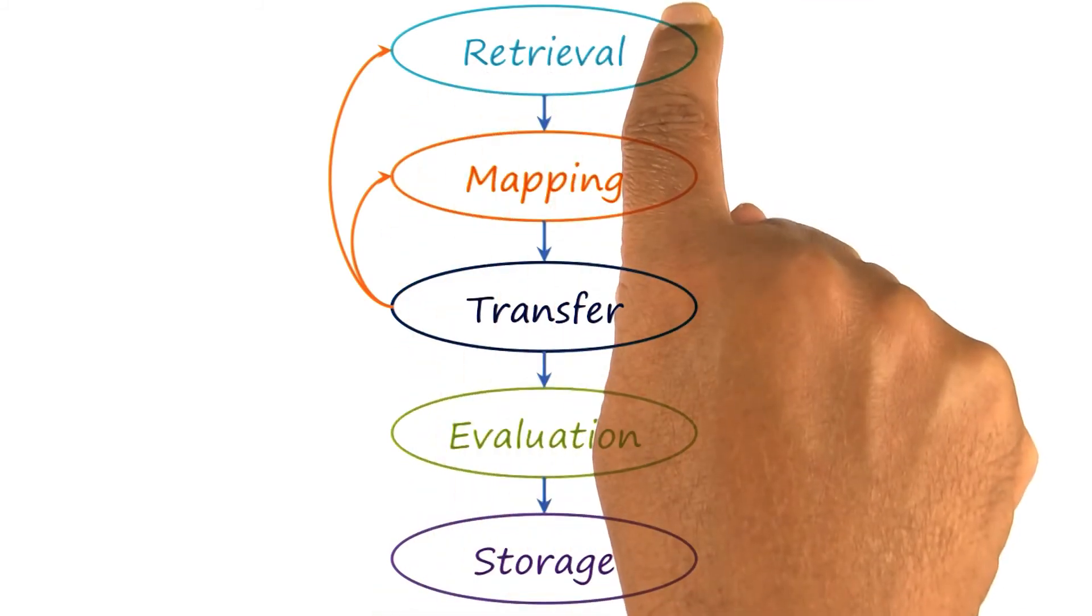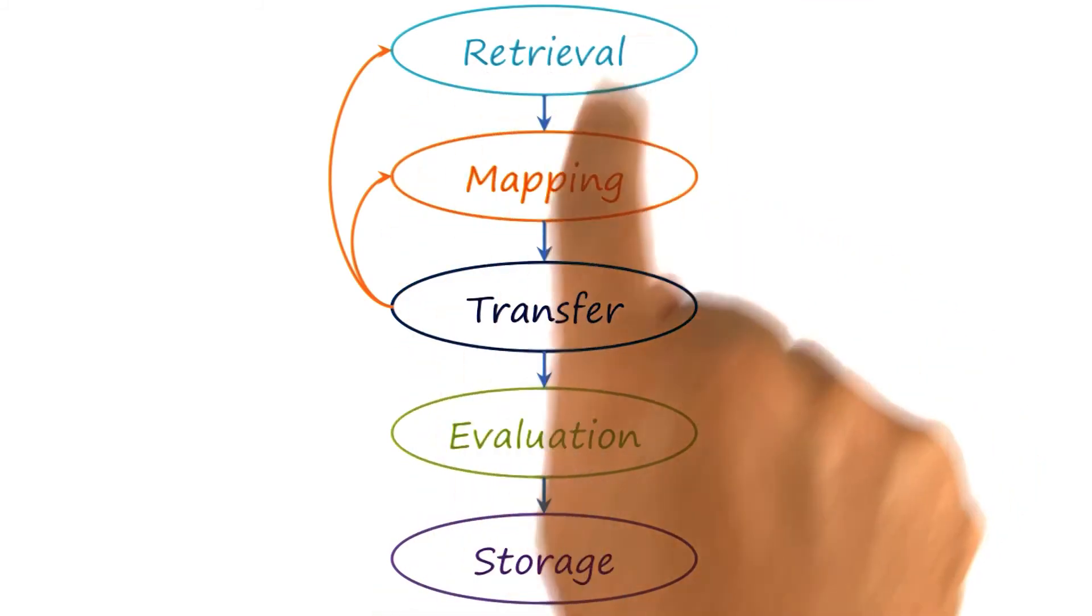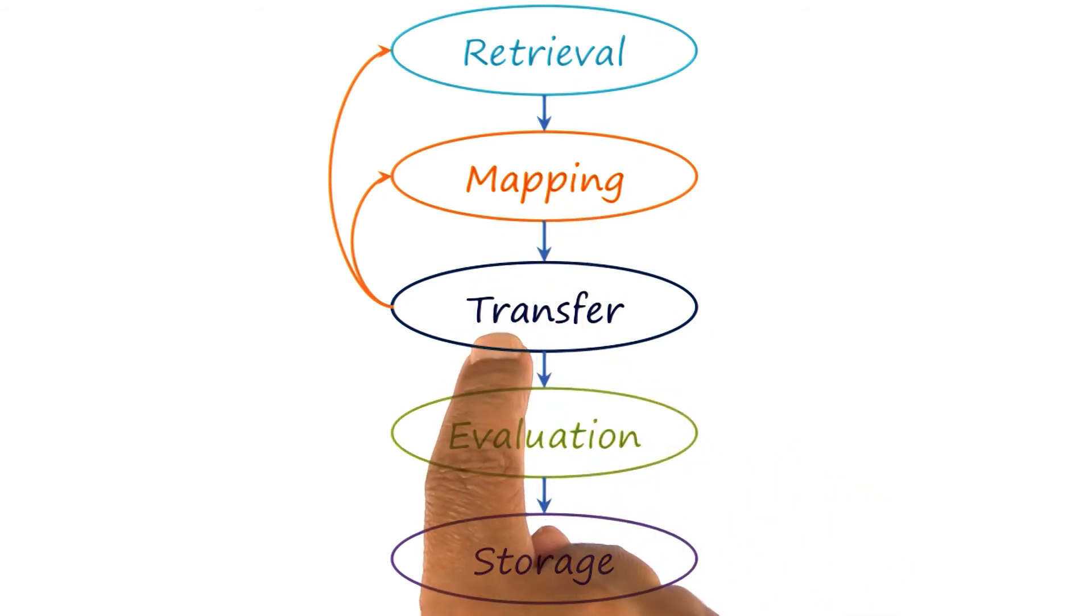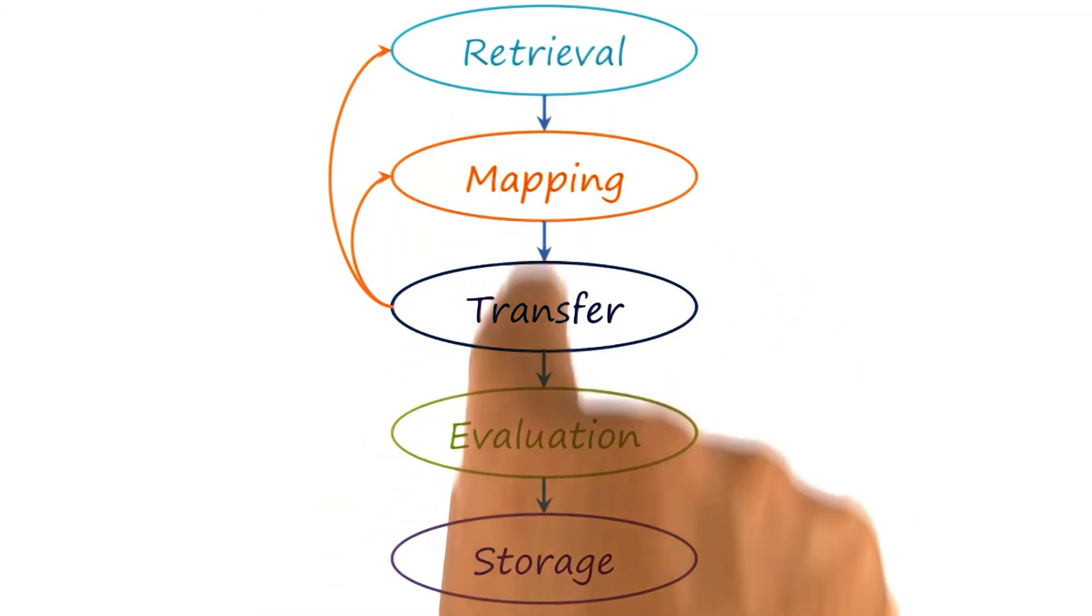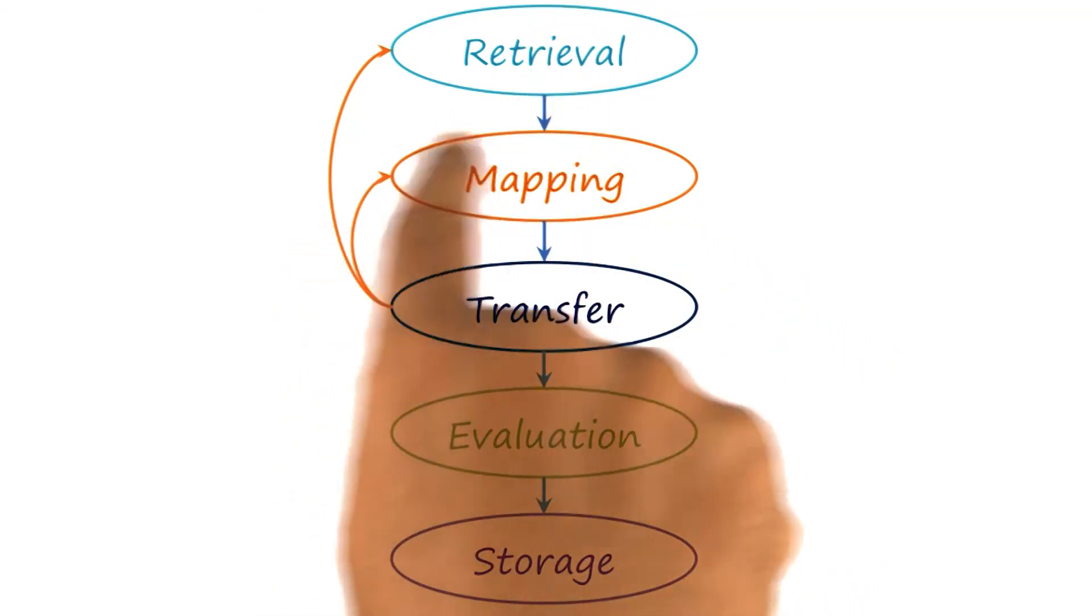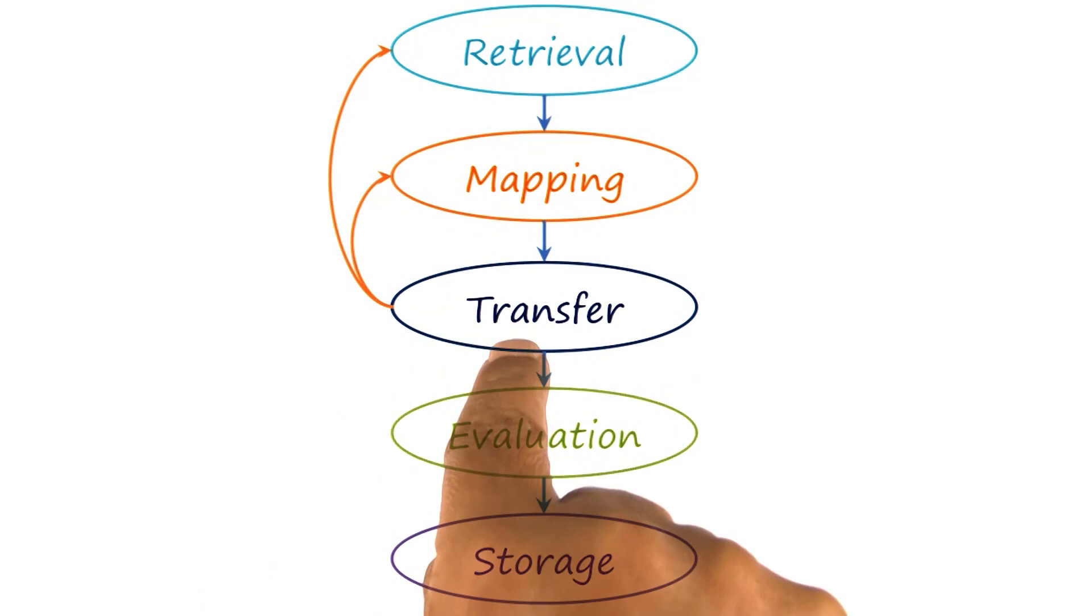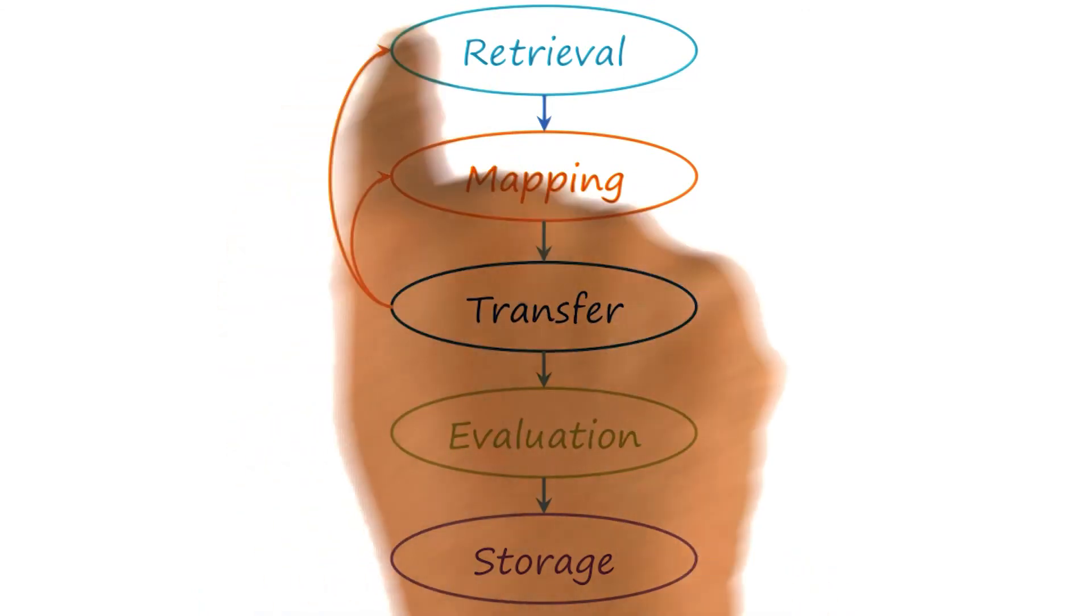So in this example, we saw how we first did analogical retrieval of the copepod organism, then mapping, then transfer. That then led to additional retrieval, in this case, of the squid. Once again, this process is not linear. Just like we can iterate between mapping and transfer, similarly, we can iterate between transfer and retrieval.